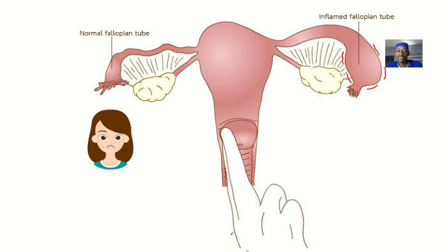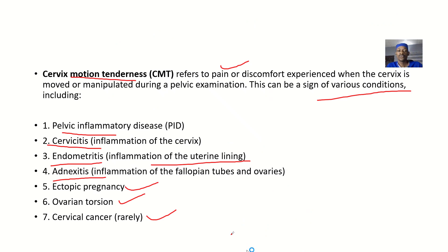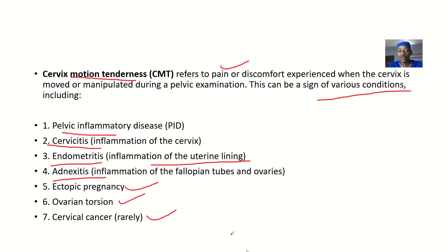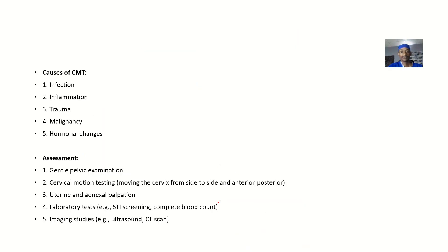How the person responds will make you suspect any of these conditions. You then start ruling out to narrow down to the specific one. It's important to know the other symptoms of all these conditions so you can rule them out and arrive at the specific diagnosis.